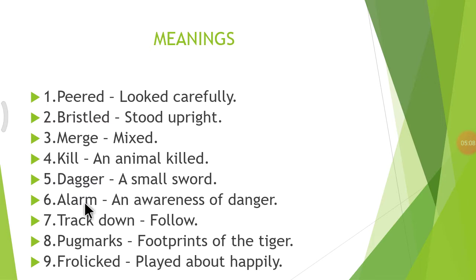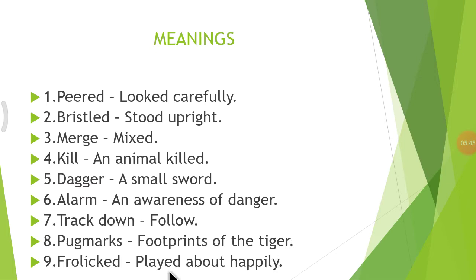Number 6: Alarm — An Awareness of Danger. Number 7: Track Down — Follow. Number 8: Pugmarks — Footprints of the Tiger. Number 9: Frolicked — Played About Happily. So there are 9 meanings in total.